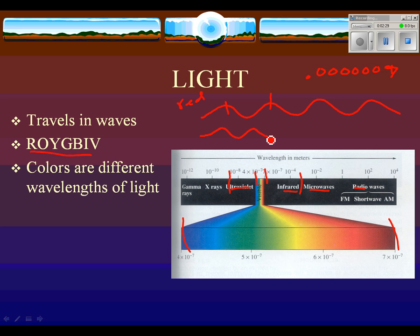Blue waves are slightly smaller — the wavelength is almost twice as small from top to top, at about 0.0000004 meters. Our eyes sense different wavelengths of light, and that's going to become important when we talk about what happens for you to see color.